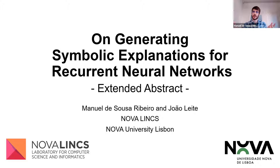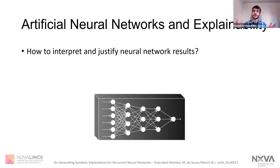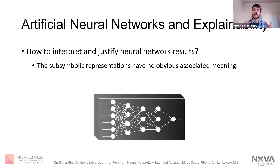Today I will be talking about generating symbolic explanations for recurrent neural networks. As we know, artificial neural networks have allowed us to solve a variety of different problems; however, they suffer from a lack of explainability. These are sub-symbolic models using sub-symbolic internal representations that do not have any human-understandable meaning associated to them. So when such a model outputs a certain result, there is no human-interpretable indication of why that output was produced.